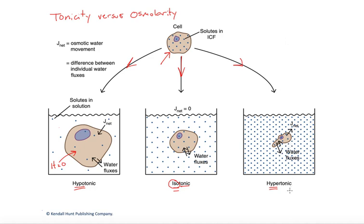It's really important to note that the terms hypo, hyper, and isotonic are comparative — you're comparing two things. Going back to the left example: when you first drop the cell into the hypotonic solution, you could say the solution is hypotonic to the cell, to the ICF, or you could say the ICF is hypertonic to the solution. So you have to know what you're comparing to what. Here, we're comparing the solution on the outside to the cell.